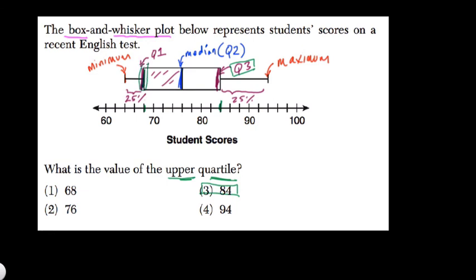So again, this is the lower quartile, this is the upper quartile, and this is the median right here, or the second quartile, or the halfway point. And that's the basic kind of box-and-whisker plot question.